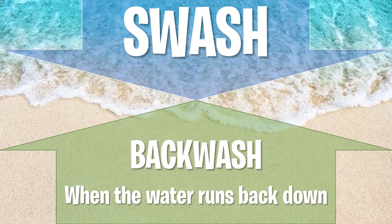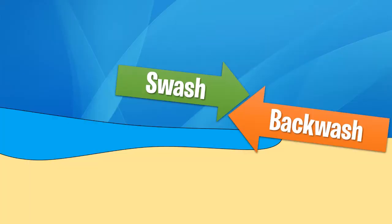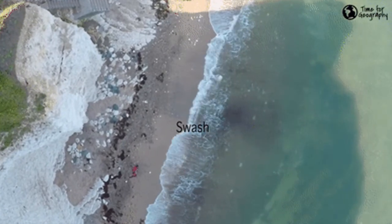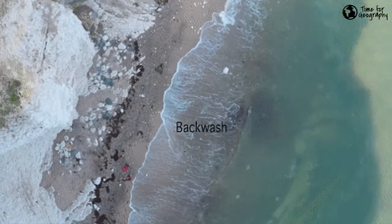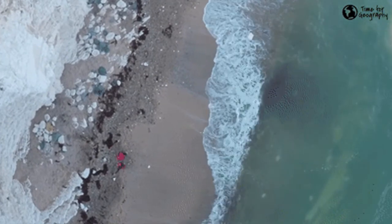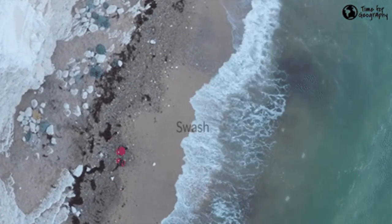Depending on which one is stronger, you get a different feature. If the swash is stronger than the backwash, you get what's called a constructive wave. Imagine the swash coming in and bringing one pound of sand onto the shore, but the backwash being weaker only takes back half. We can see the swash going in and gently the backwash coming back — this is a constructive wave because the swash is stronger.